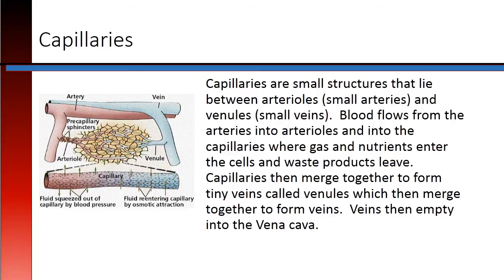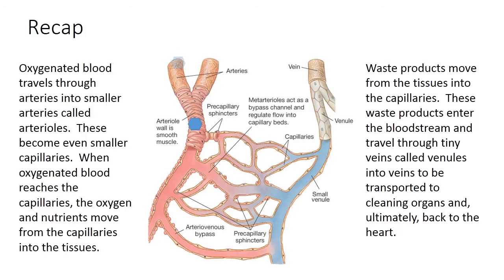Capillaries then merge together to form tiny veins called venules, which then merge together to form veins. Veins then empty into the vena cava. Oxygenated blood travels through arteries into smaller arteries called arterioles, which become even smaller capillaries. When oxygenated blood reaches the capillaries, the oxygen and nutrients move from the capillaries into the tissues. Waste products move from the tissues into the capillaries, enter the bloodstream, and travel through venules into veins to be transported to the cleaning organs and, ultimately, back to the heart.